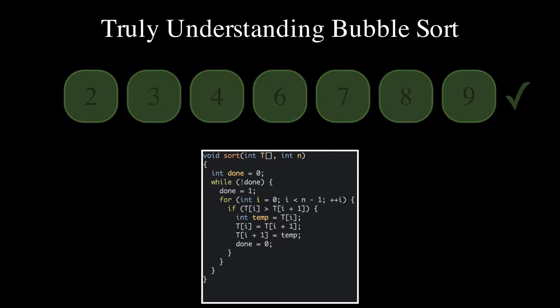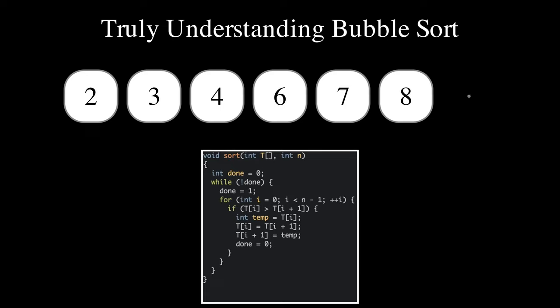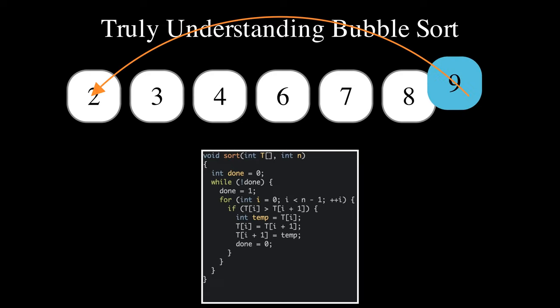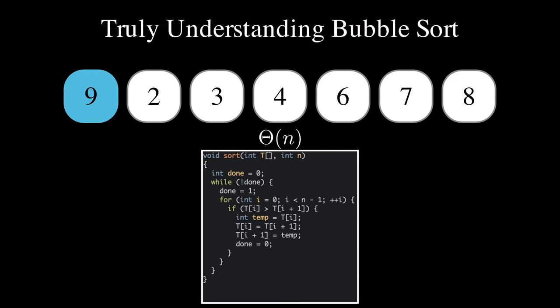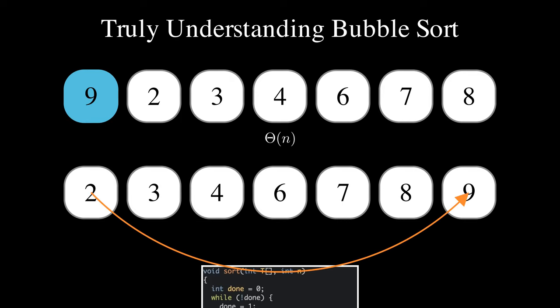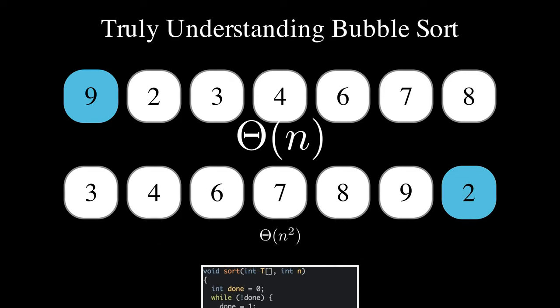Bubble sort has an interesting asymmetry in running time between almost sorted arrays where the largest element is displaced towards the beginning of the array and almost sorted arrays where the smallest element is displaced towards the end of the array.